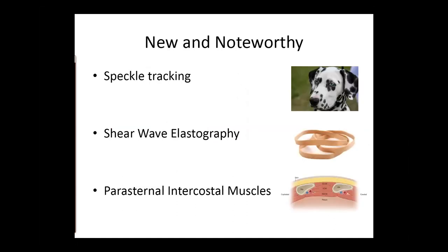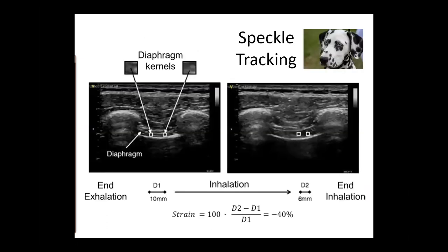So far: diaphragmatic excursion can help determine if the diaphragm is paralyzed unless there is a large pleural effusion, but it does not predict diaphragmatic function. Thickness does not correlate to function, and thickening fraction — especially low thickening fraction — may predict poor function but not weaning failure. A few newer techniques have emerged in the past couple of years: speckle tracking and shear wave elastography, and a new approach looking at intercostal muscle thickening.